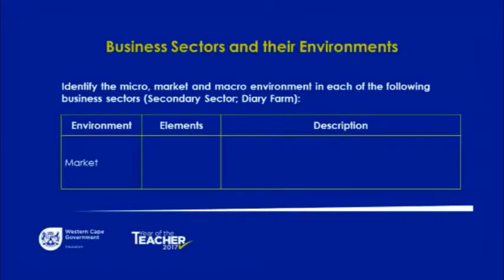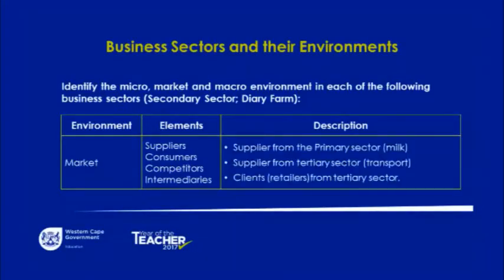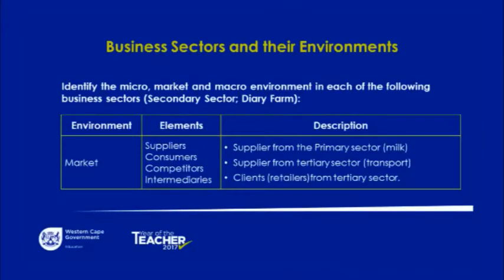In the market environment of the secondary sector, using the same dairy farm example, the elements are the suppliers, the consumers, the competitors, and the intermediaries. The supplier from the primary sector would be the milk received from the primary sector. Suppliers from the tertiary sector include transport, which is a service being rendered. Another description includes the clients or retailers from the tertiary sector.